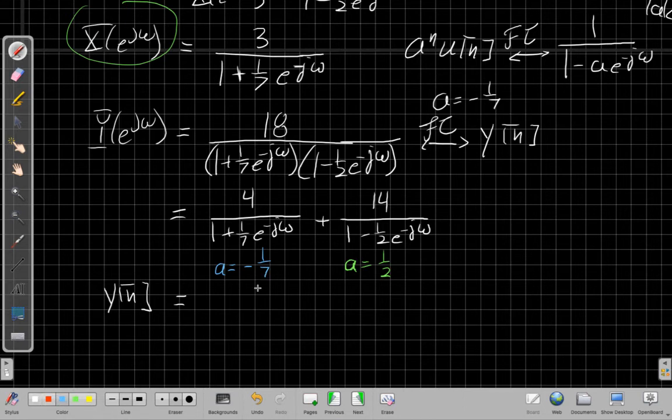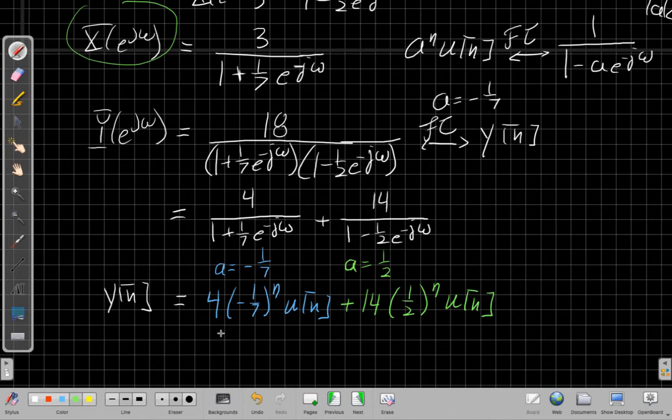If I carry those through, the first term is the a = -1/7 term: 4(-1/7)^n u[n]. The second term is 14, the gain from the numerator, times (1/2)^n u[n]. So y[n] = 4(-1/7)^n u[n] + 14(1/2)^n u[n]. The nice feature of this is if I want to find the output at any time, I can just plug in n.